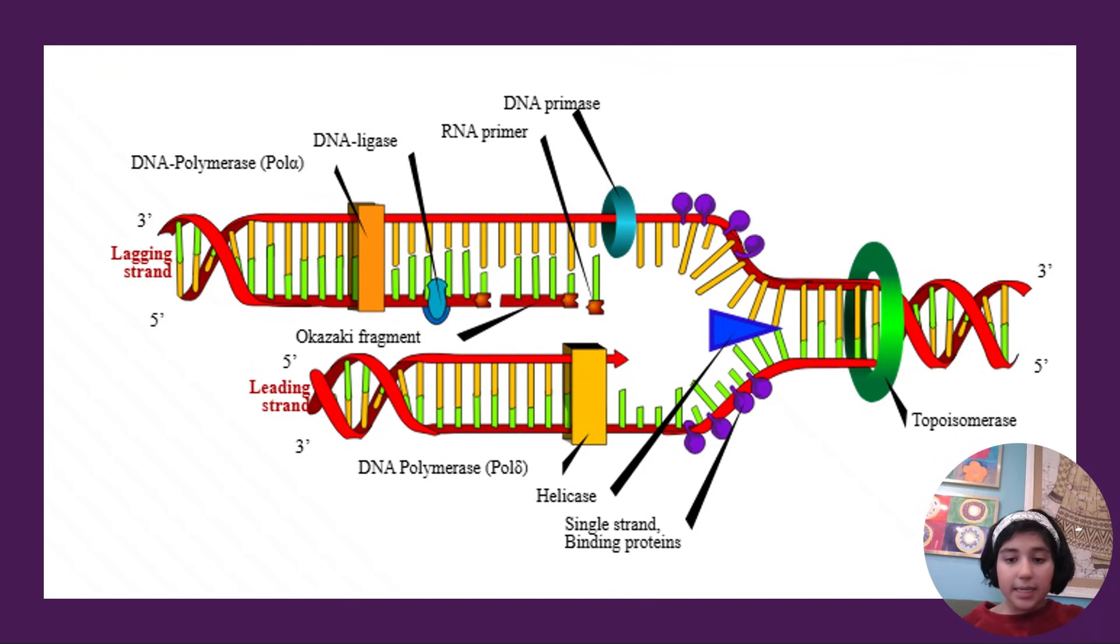The next is topoisomerase. Topoisomerase prevents the DNA from supercoiling. Supercoiling is harmful because imagine that a spring or a rubber band is being twisted around too much - eventually it will break, and the same thing happens with DNA.